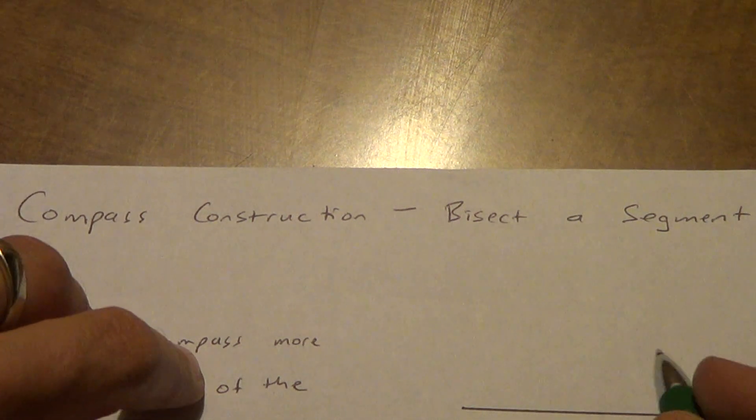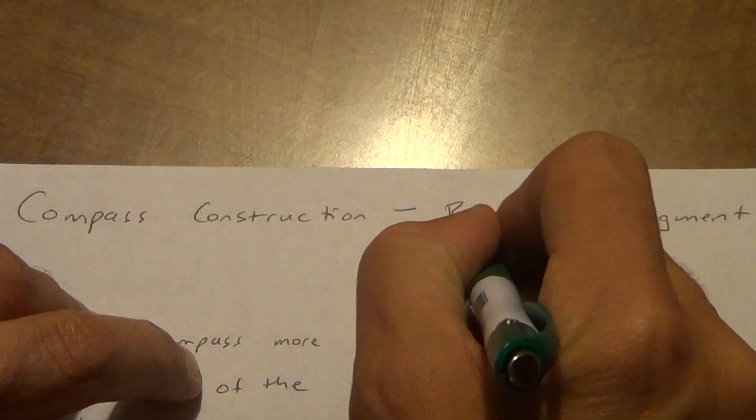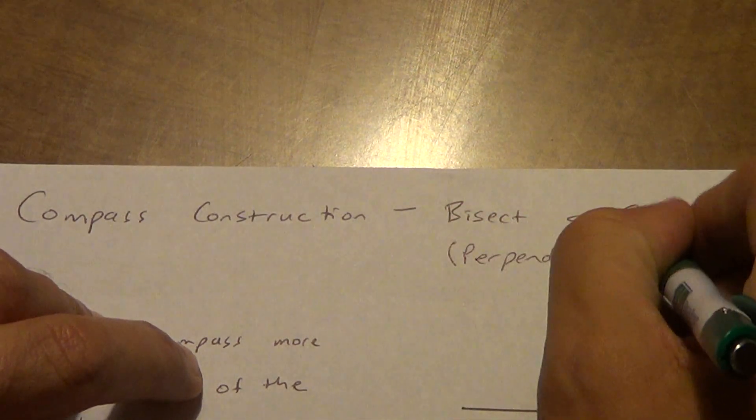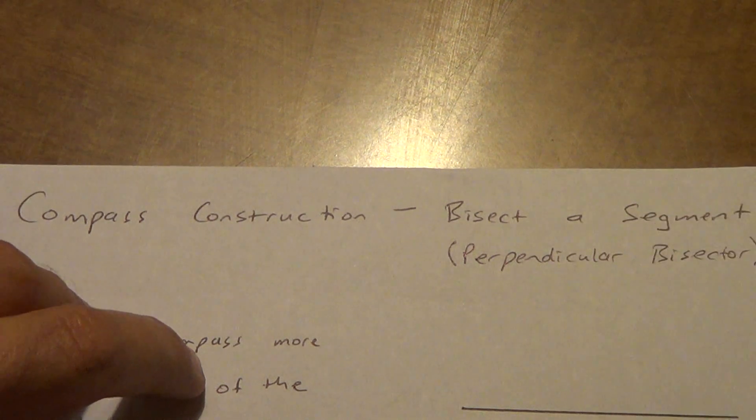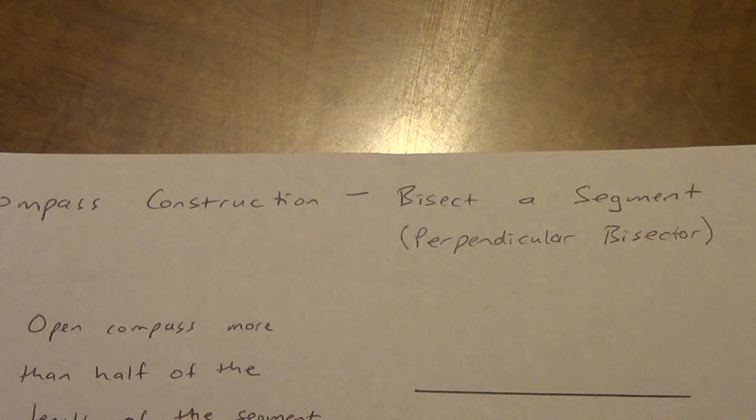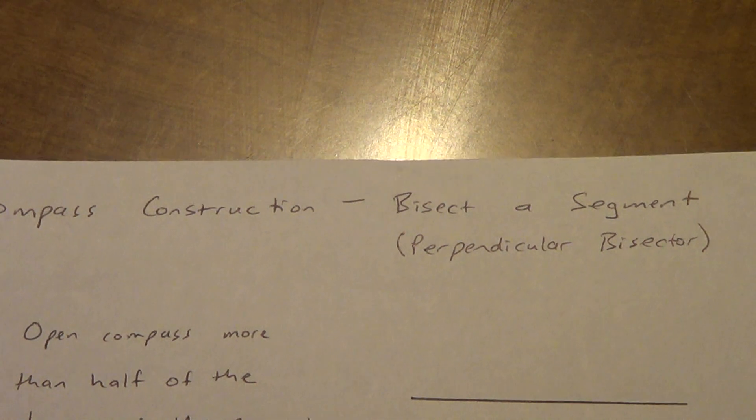And even more important than just bisecting a segment, this actually ends up being a perpendicular bisector of a segment. Perpendicular, you probably already remember that from another class, but perpendicular means that the two things meet at a right angle.